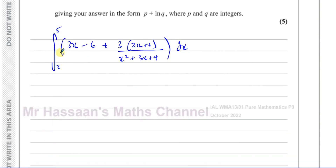For the first two terms there's no problem: 2x integrates to x squared, and minus 6 integrates to minus 6x. Now the fraction looks tricky. Many people will think we need to split it into partial fractions and factorize the denominator — but you can't factorize x squared plus 3x plus 4, because there are no two numbers that multiply to give 4 and add to give 3. So this cannot split into partial fractions.